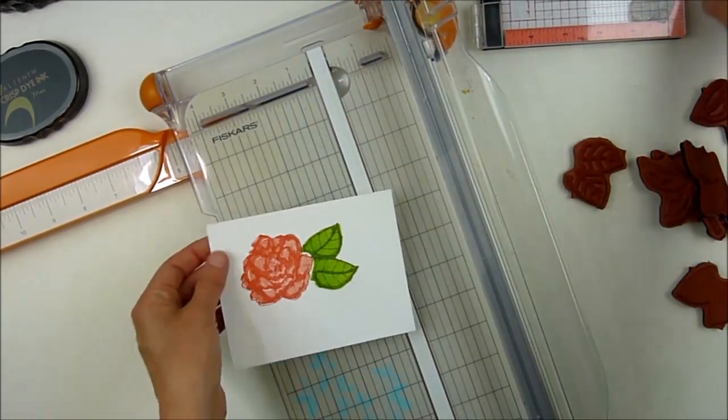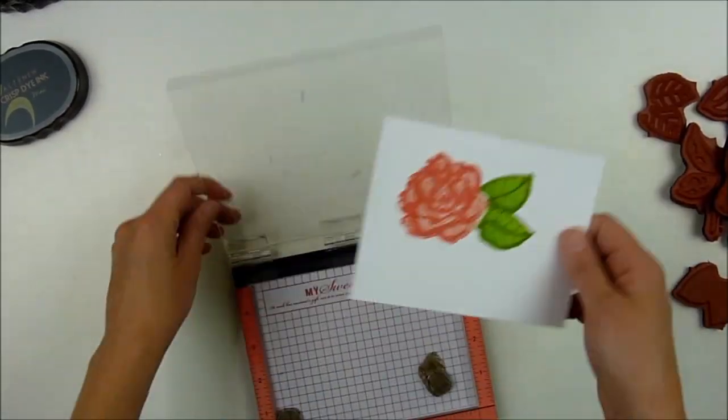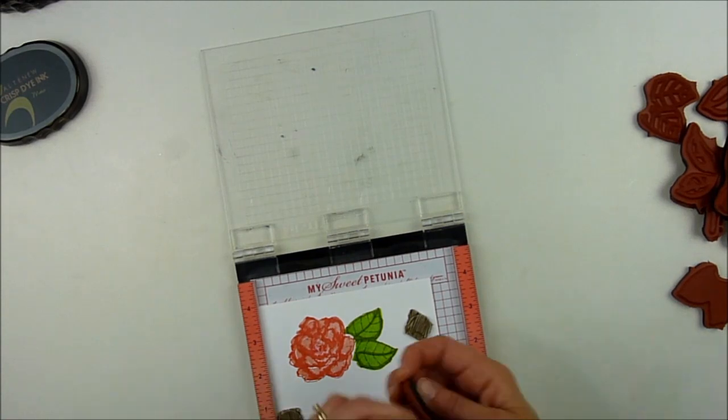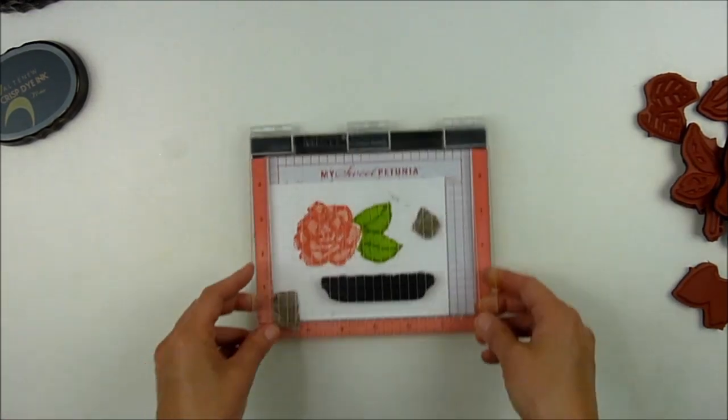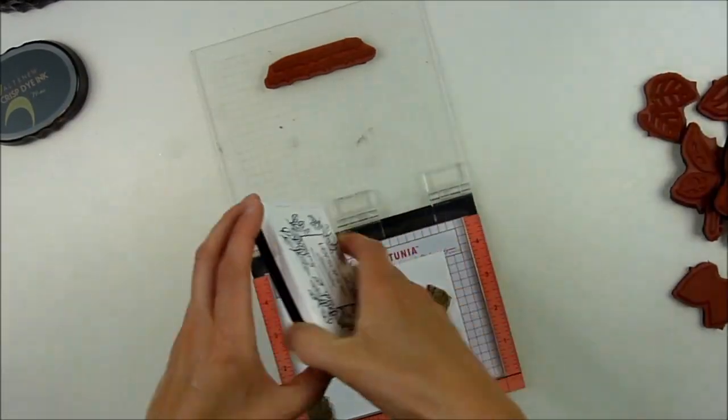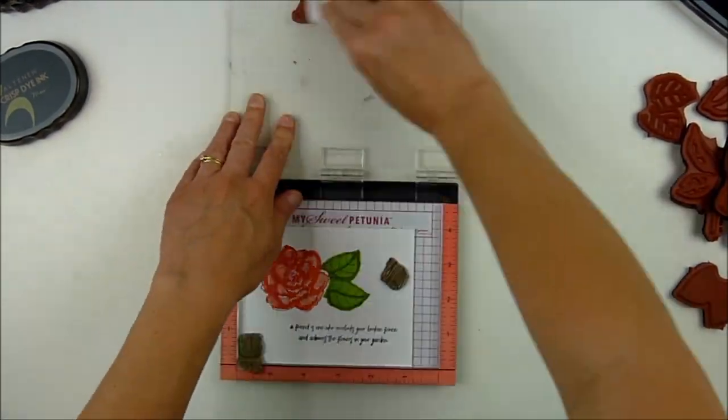And then I'm going to add my sentiment on there and then do a little extra stamping to frame the image and the sentiment as I have on there, and then mount it on a basic card base afterwards. I'm using the sentiment from the same stamp set. I really think it's such a fun sentiment and anyone who has a garden can kind of identify with it. So I've lined up my sentiment, stamping it quickly in black.